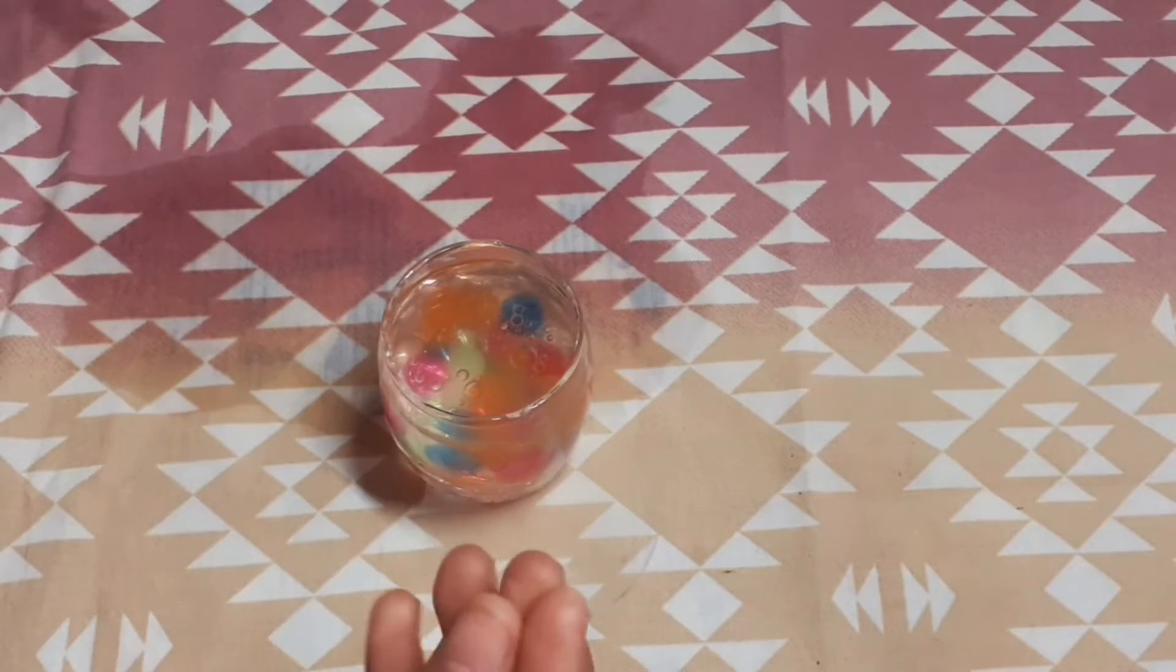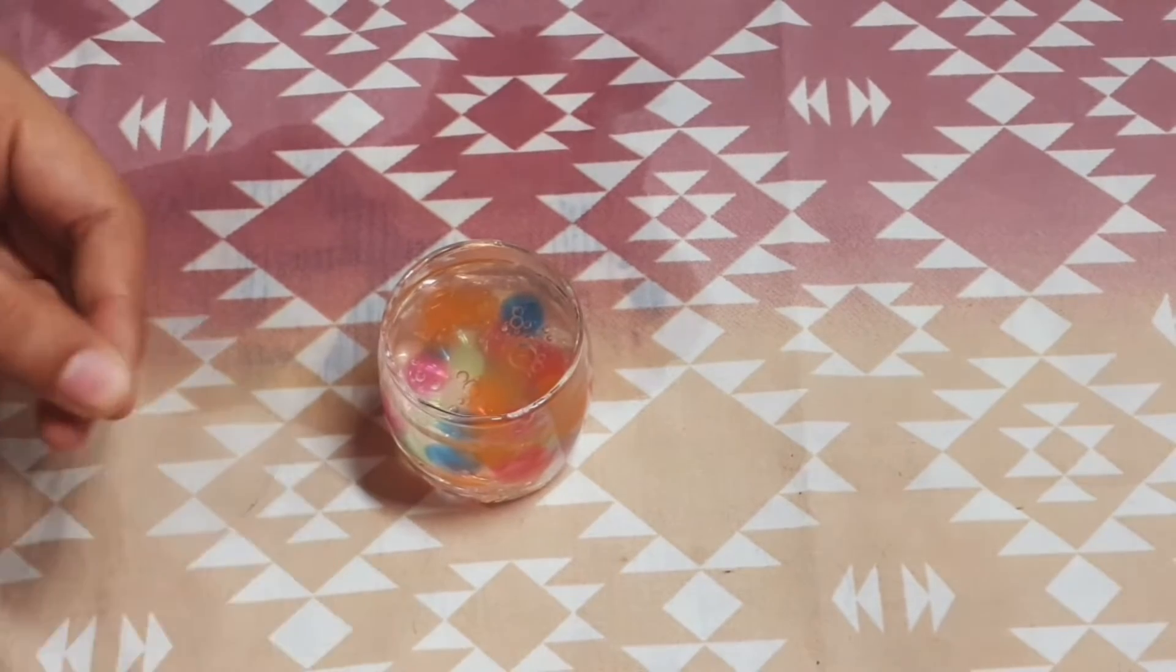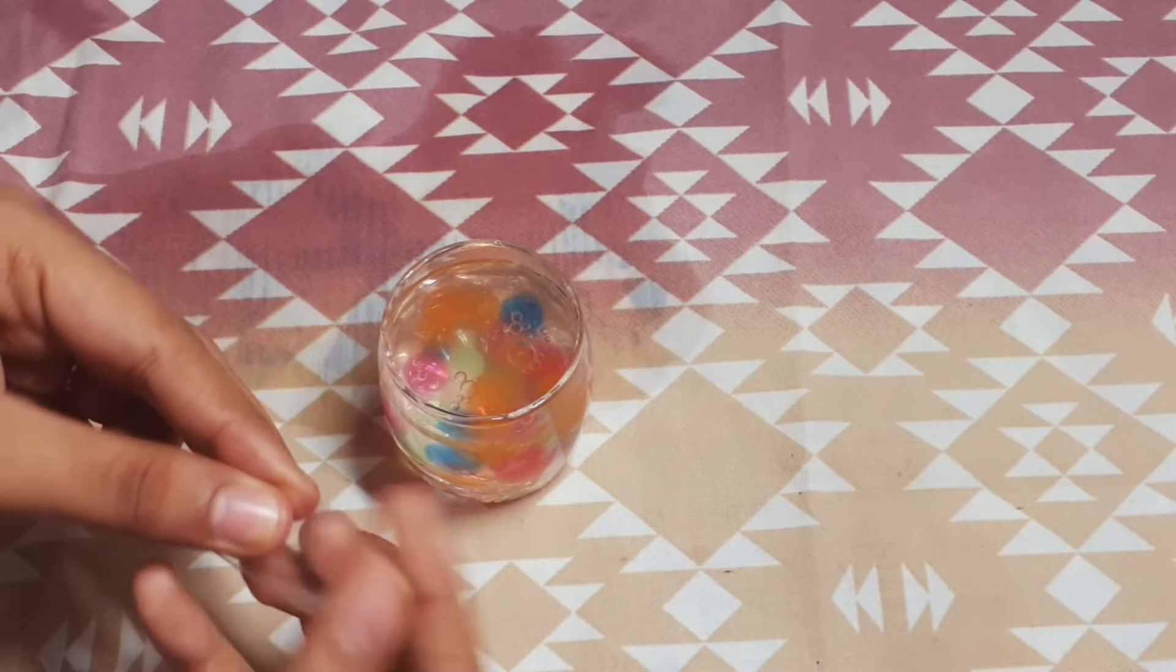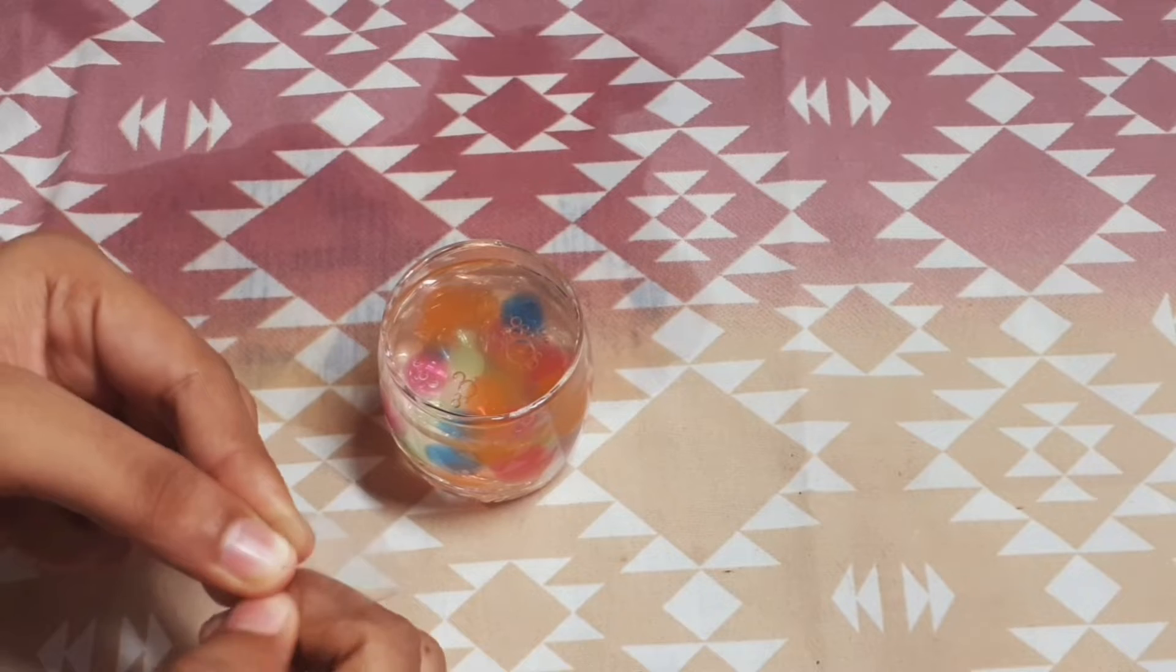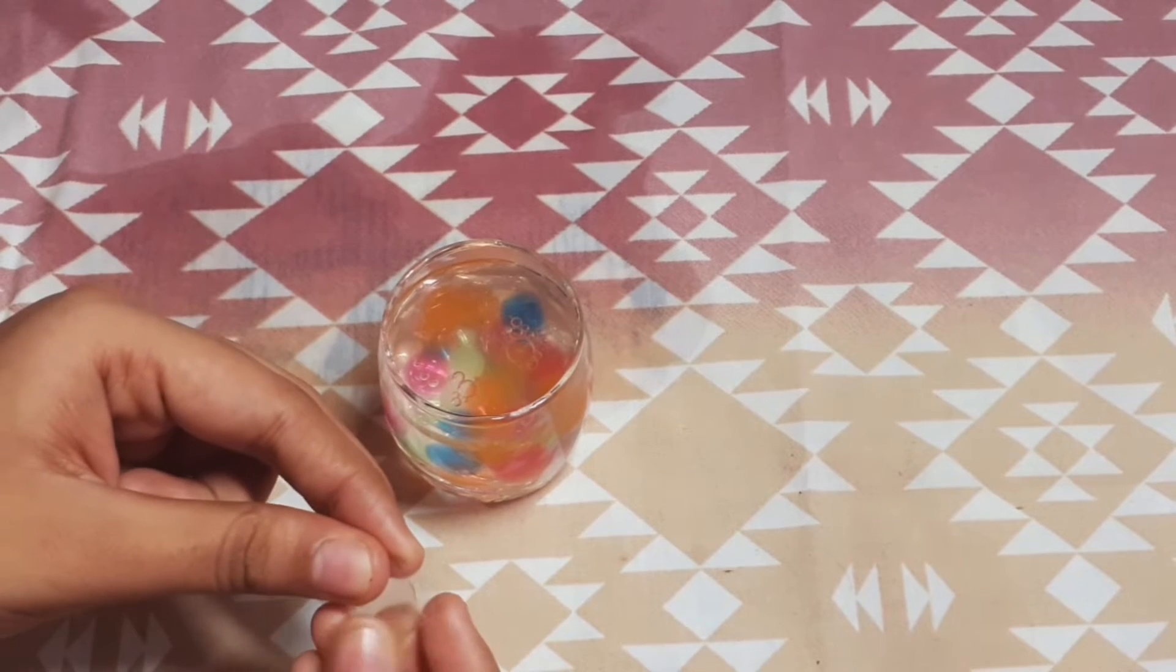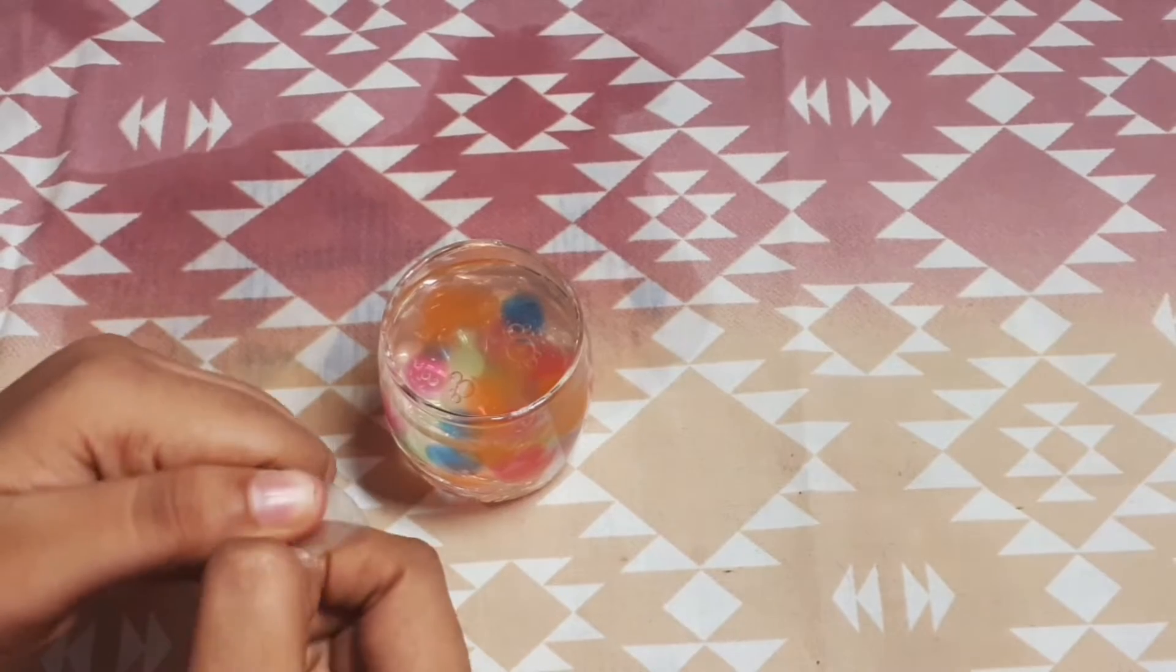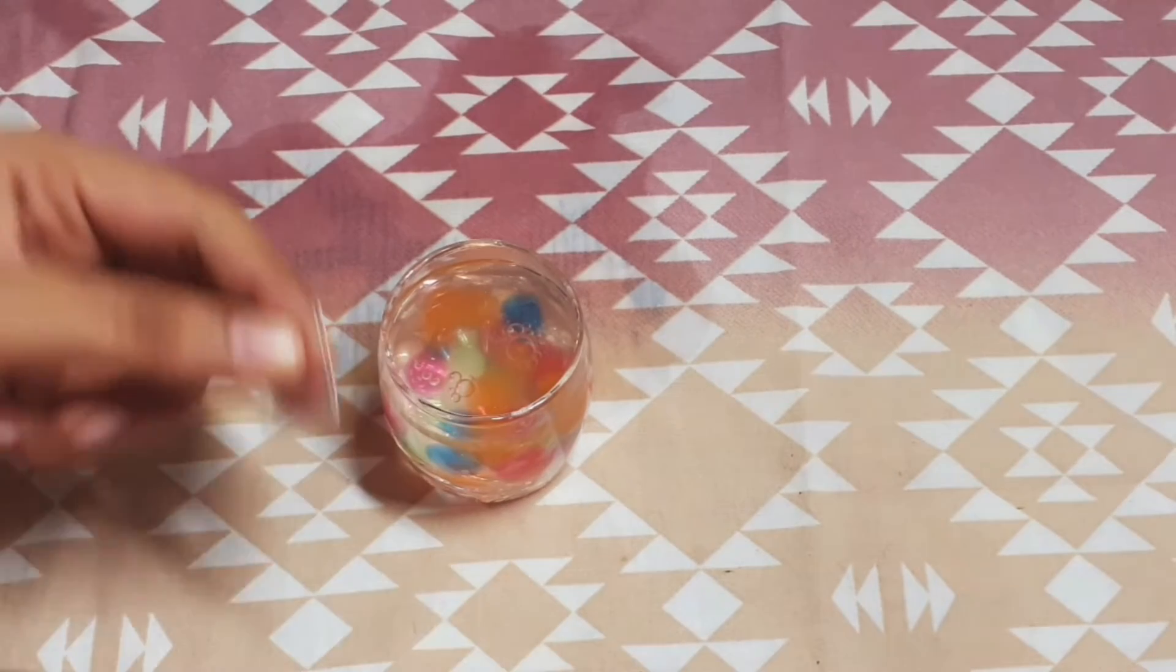So after this, now take that OHP sheet and fold it into half, and from this again fold it into another half. See the video so it will be very clear to fold it.